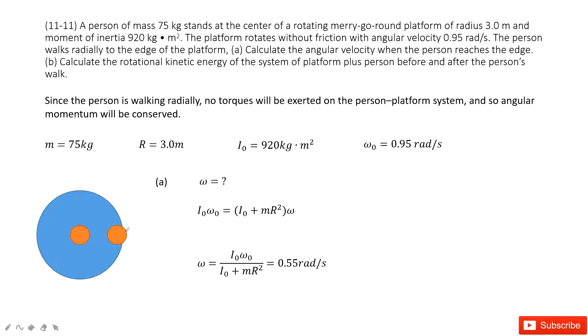Now, when the person walks from center to the edge, the moment of inertia changed. We should consider the moment of inertia for the merry-go-round and M times R squared.